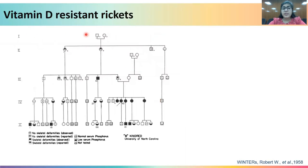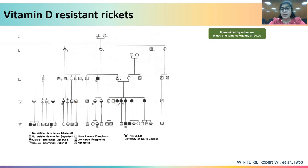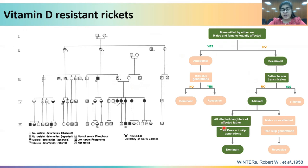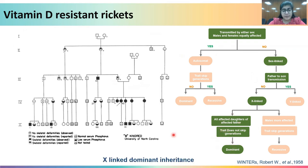Next, looking at non-syndromic hearing impairment, almost all affected members are males and there is clear father-to-son transmission — a typical example of Y-linked inheritance. For Vitamin D resistance, all daughters of an affected father are affected, and there is an unequal distribution of affected males and females, indicating the trait is sex-linked. Since all daughters of an affected father are affected and the trait does not skip generations, this is a typical example of X-linked dominant inheritance.